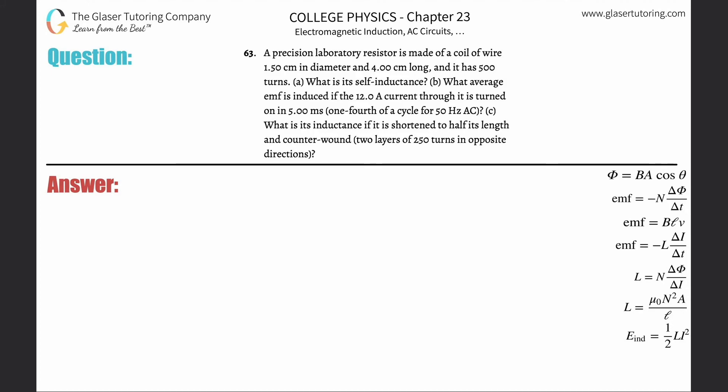Problem 63: A precision laboratory resistor is made of a coil of wire 1.5 centimeters in diameter and 4 centimeters long with 500 turns. Part A asks: what is its self-inductance? This is basically describing a solenoid.